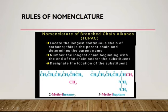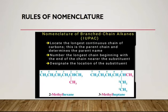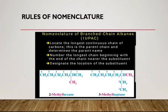The suffix '-ane' tells us this belongs in the alkane homologous series, giving us the full name: 2-methylhexane. In the next example, following the highlighted longest chain carefully — because it can branch in unexpected directions — we count seven carbons, giving us 'hept'. There are only single bonds so it's an alkane. The substituent occurs at carbon number three, so the name is 3-methylheptane.